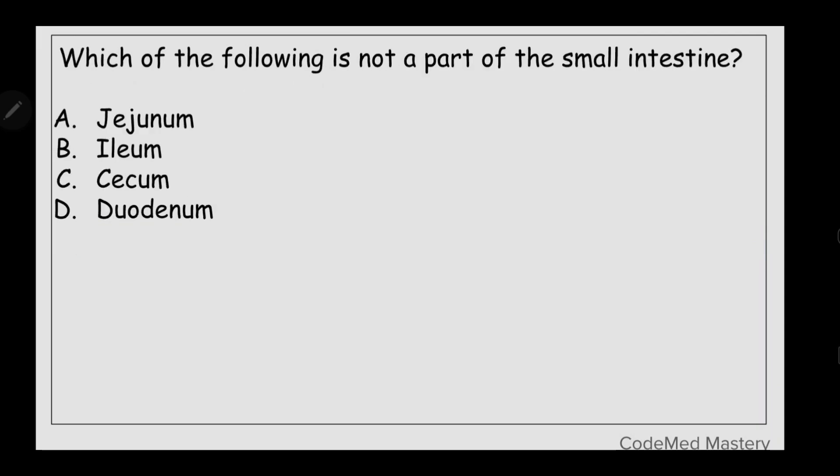Next question: which of the following is not a part of the small intestine? Option A: jejunum, option B: ileum, option C: cecum, option D: duodenum. The right answer is option C, cecum.